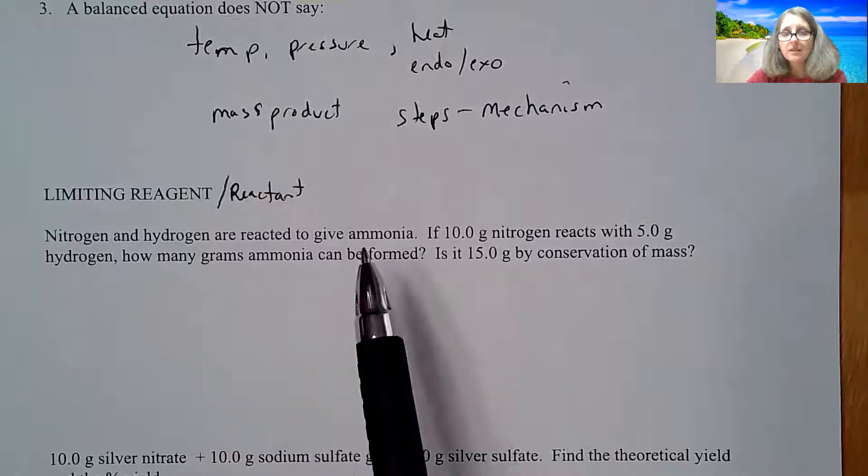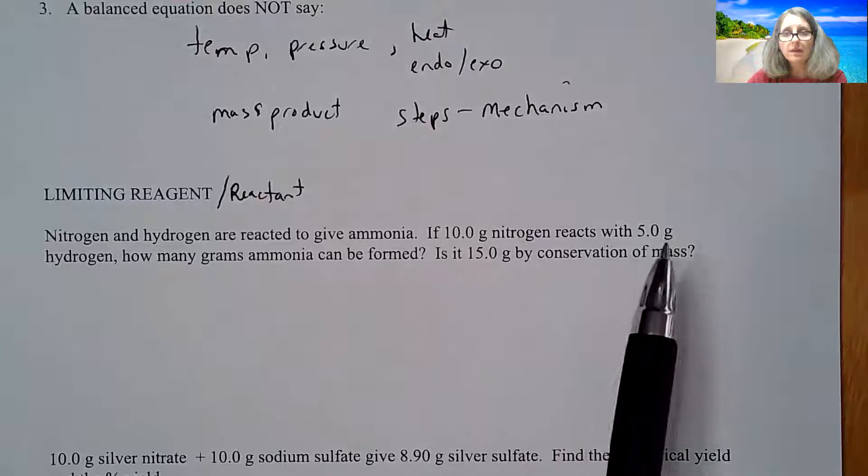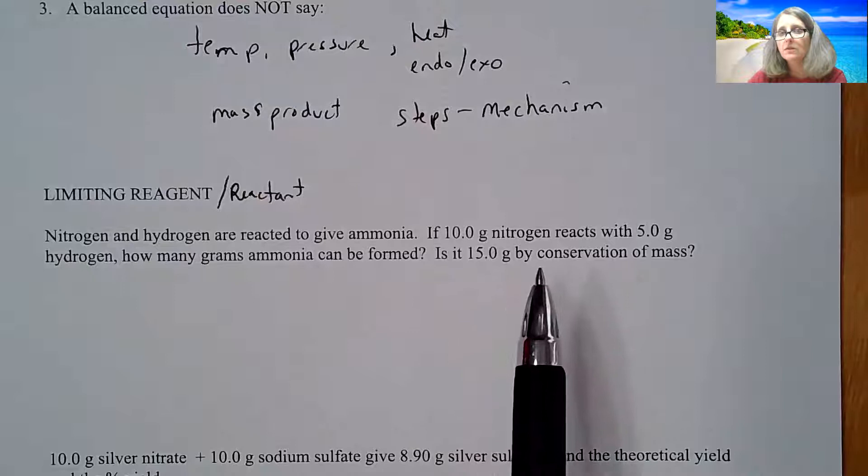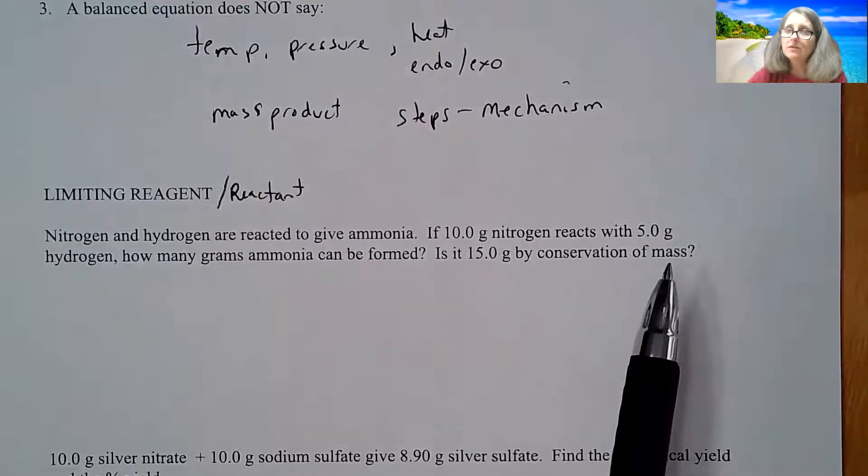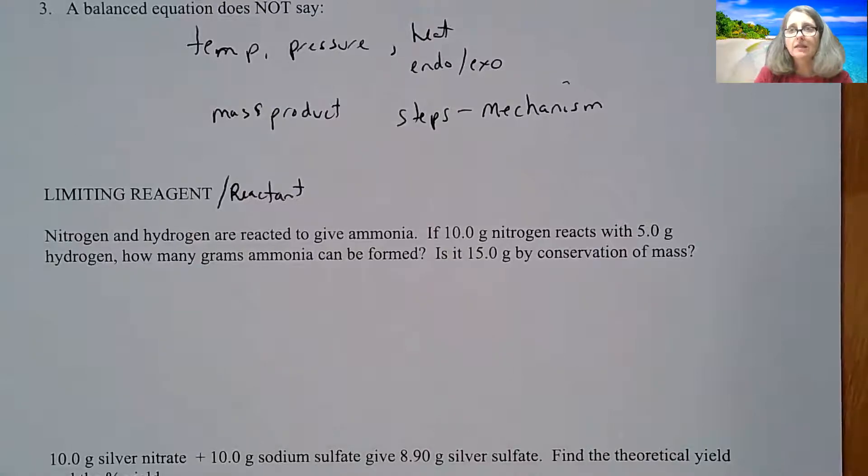So if nitrogen and hydrogen are reacting to give ammonia, and that's the equation I just showed you, 10 grams of nitrogen reacts to 5 grams of hydrogen. How many grams of ammonia can be formed? Is 15 grams the correct answer because of conservation of mass? I'm going to pause the video here in a second just so I can get things set up.